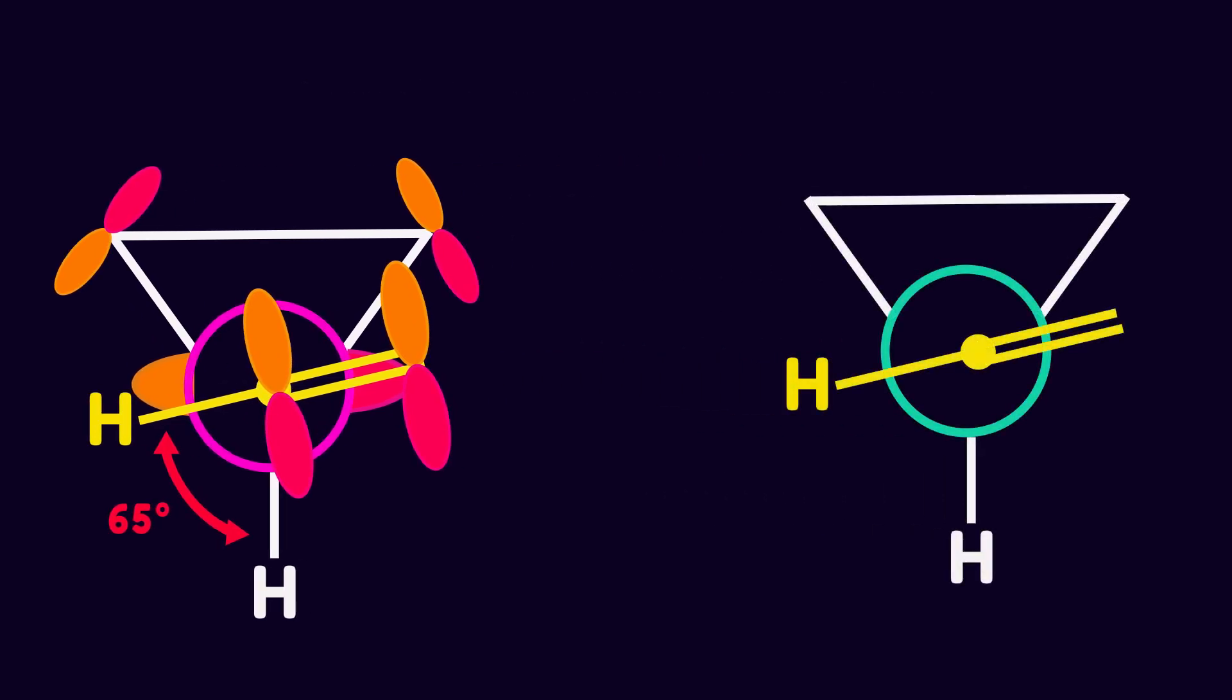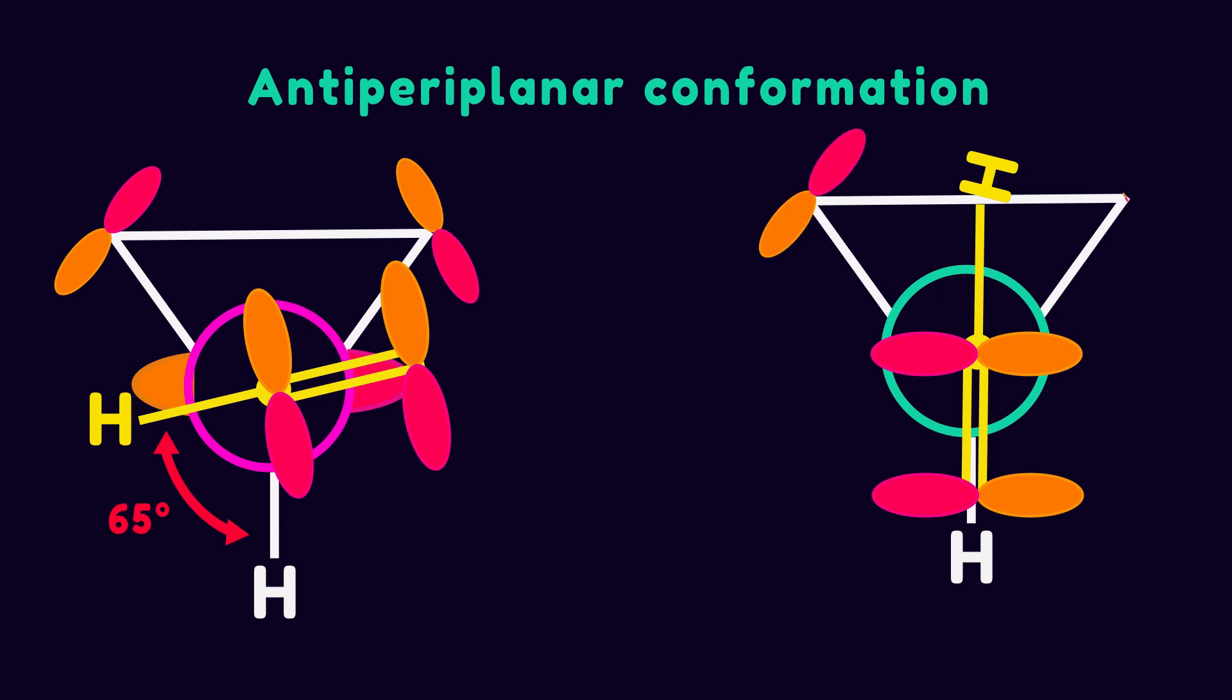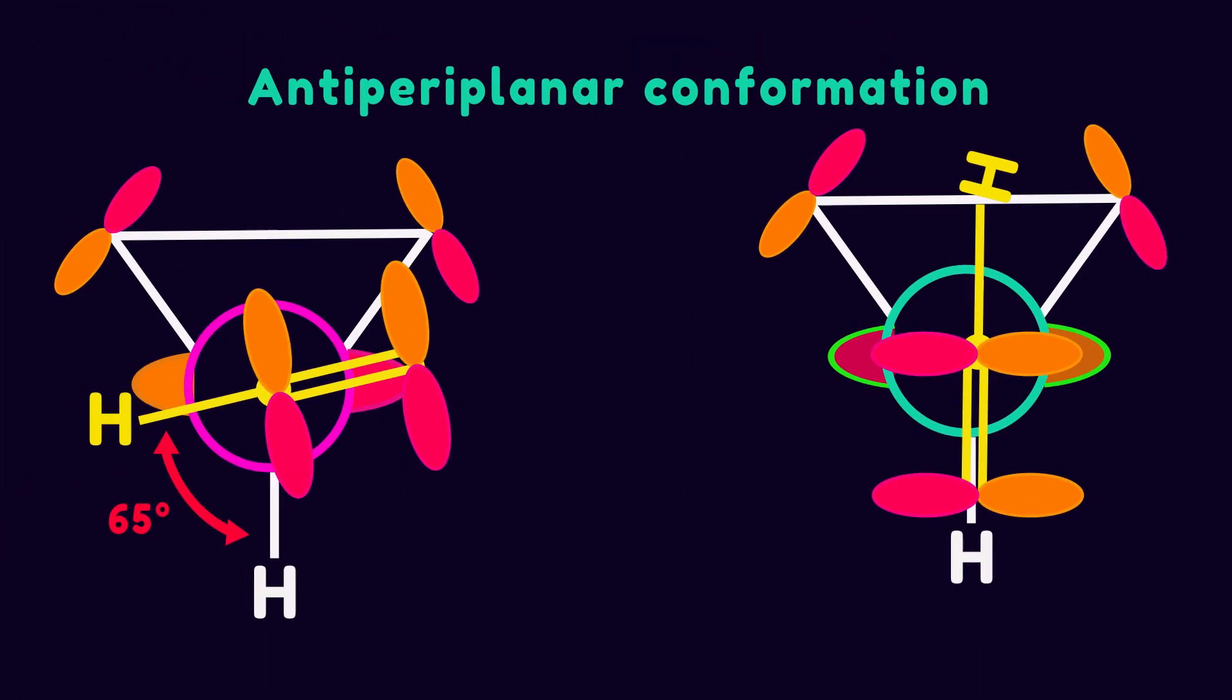The second conformation is called antiperiplanar, in which two hydrogens have 180-degree dihedral angle. In this conformation, one of the p orbitals of the double bond and cyclopropane have maximum interaction. So antiperiplanar conformation is more stable than synclinal. If conformational analysis is an interesting topic to you, check this video.